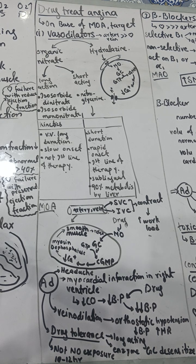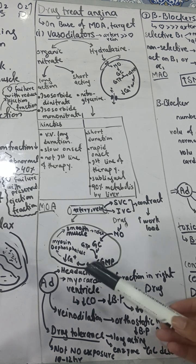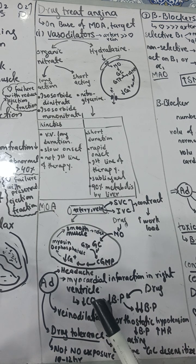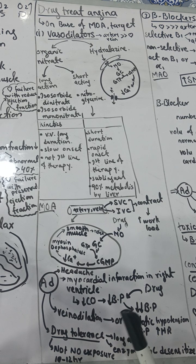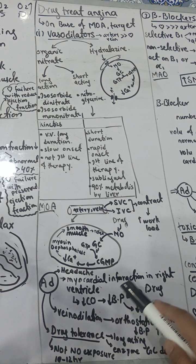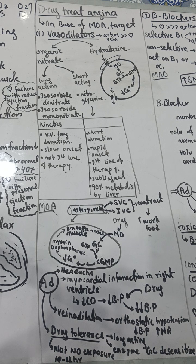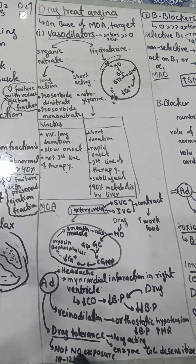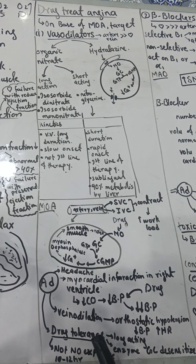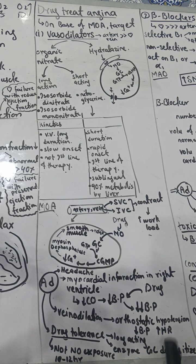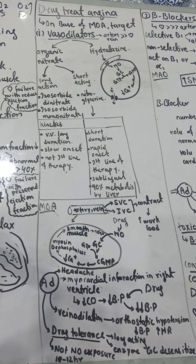Organic nitrates have several adverse effects. They can cause headache. In myocardial infarction of the left ventricle, they can cause decreased cardiac output and decreased blood pressure. In right ventricular myocardial infarction, where blood pressure is already decreased, giving this drug decreases blood pressure further, leading to severe hypotension. They can also cause vasodilation, particularly in the legs, which causes orthostatic hypotension — also called positional hypotension — which is very important from a viva point of view.